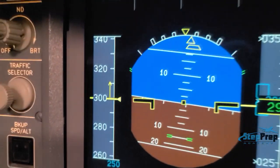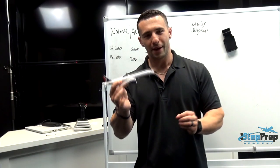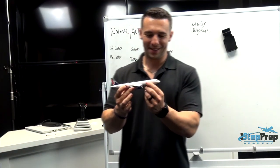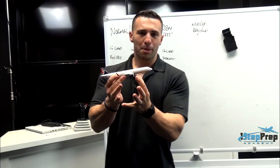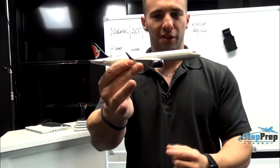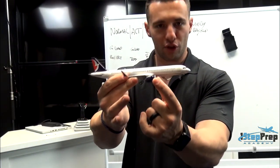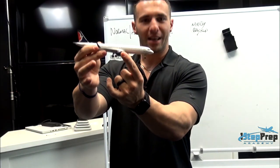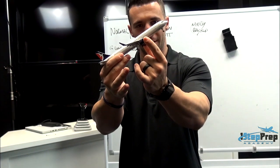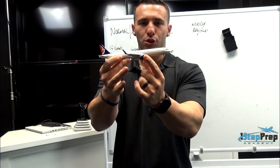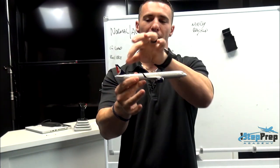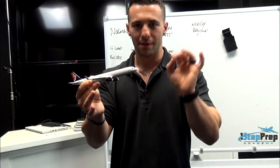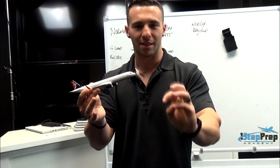Now let's turn our attention to pitch, working with an Air Macau model from one of my students who trained here. The engines are mounted under the wing. The result is that thrust application produces a considerable nose-up tendency. This is very true for any under-wing engine aircraft — 737, 777, 747, 767.